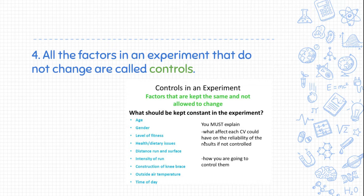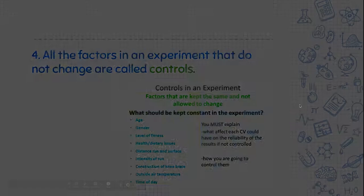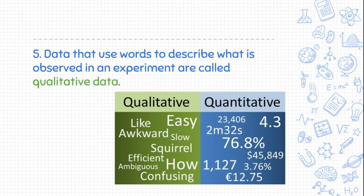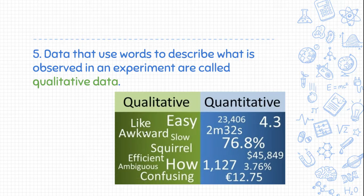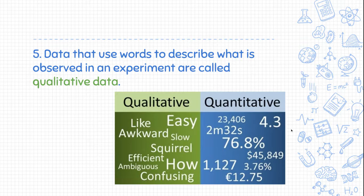All the factors in the experiment that do not change are called the controls. Things like age, gender, fitness level must be kept the same in a health experiment — we have to make sure we have constants. When we have data, we have both qualitative and quantitative data. Qualitative describes a quality of the object — slow, red, ambiguous, confusing. Quantitative data are all numbers; any quantitative value has a number to it, a quantity.